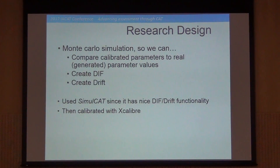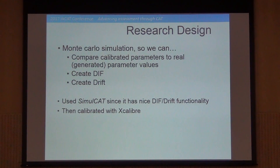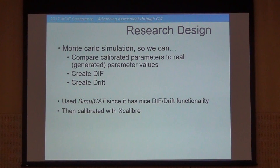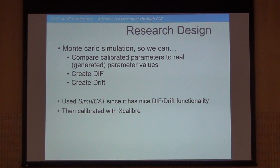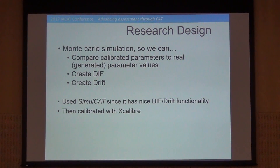So my goal was to do a Monte Carlo research design where I crafted data sets that had a known amount of drift that I wanted to find, and then checked to see if I could actually detect it. I did this using SimulCAT. Chris Hahn is the author of SimulCAT. It has nice drift functionality, and you can run CAT simulations with the software — for example, specifying that you want the first 5,000 examinees to have drift. I created these data sets using SimulCAT and then calibrated them in Xcalibre, my company's calibration software, to see if I could then detect the drift.